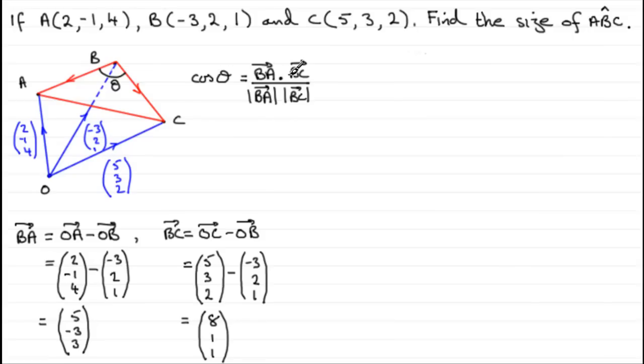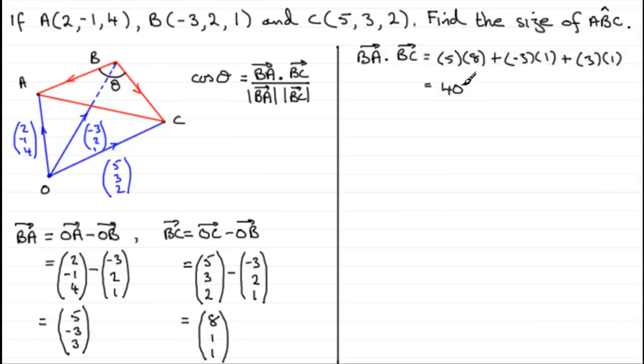Okay, so we've got BA and BC. We're now in a position to work out BA dotted with BC. So BA dot BC is going to equal, let's put in the parts here: 5 times 8, then we add the -3 times 1, and finally we do 3 times 1. If you work this out, we've got 8 fives of 40 take away 3 plus 3, which just leaves us with 40. So BA dot BC is 40.